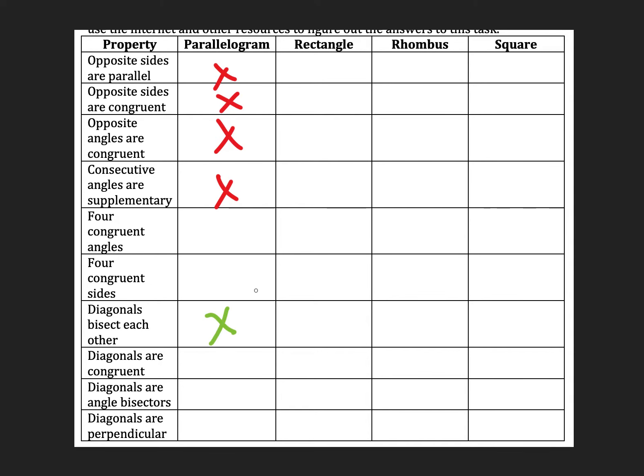And then diagonals are congruent, that is not true. Diagonals are angle bisectors, that's not true. And diagonals are perpendicular, those are not true. So these properties that we have for parallelograms, since all of these shapes over here are also parallelograms, we can mark off all these properties and we'll just talk about the remaining properties for each of these.